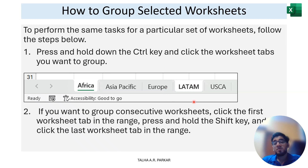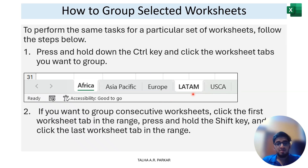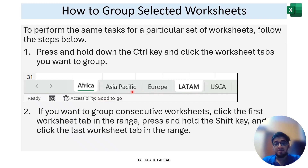Now let's say I wanted to group all sheets together — from Africa to LATAM, which includes Asia Pacific and Europe as well. Instead of pressing Ctrl, I use Shift. So to select an individual sheet you press Ctrl, and if you want to select consecutive sheets, you click the first sheet, press Shift, and then click LATAM — so all four sheets get grouped together.